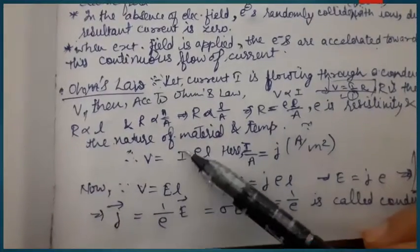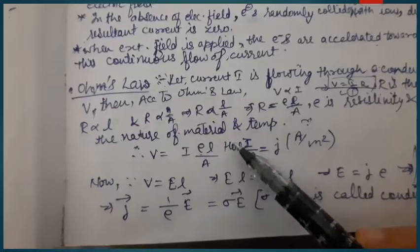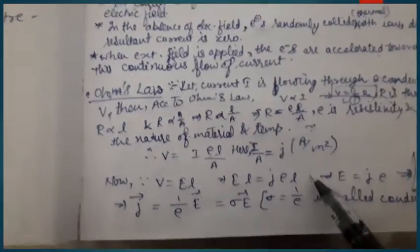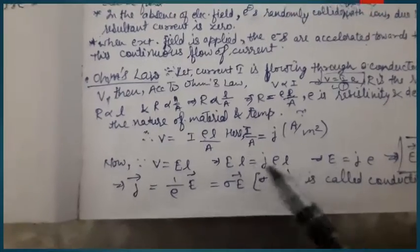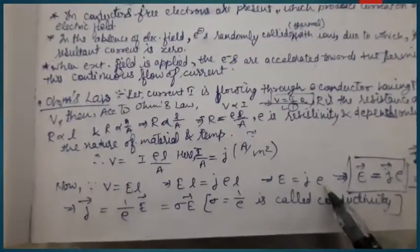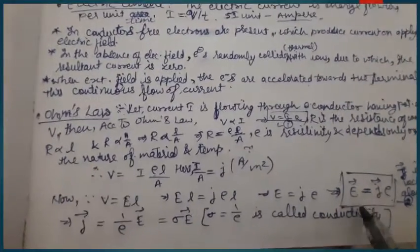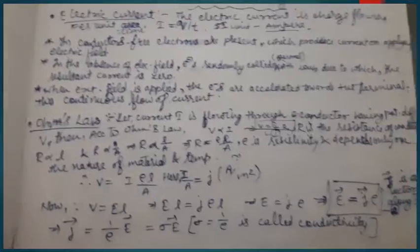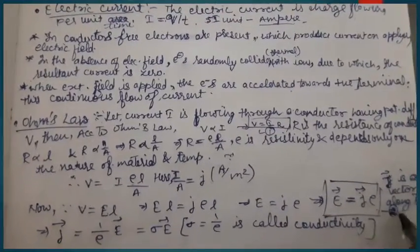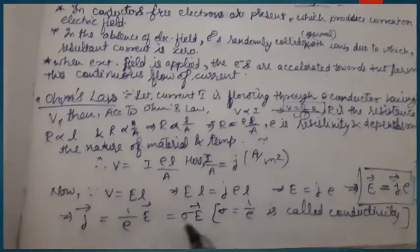From the above equations, I can write I/A as J, so V = Jρl. Since E × l = V, which is also Jρl, we can write E × l = Jρl. The l cancels on both sides, giving us E = Jρ. Both J and E are vector quantities, so the vector form is E⃗ = J⃗ρ, where J⃗ direction is along E⃗.